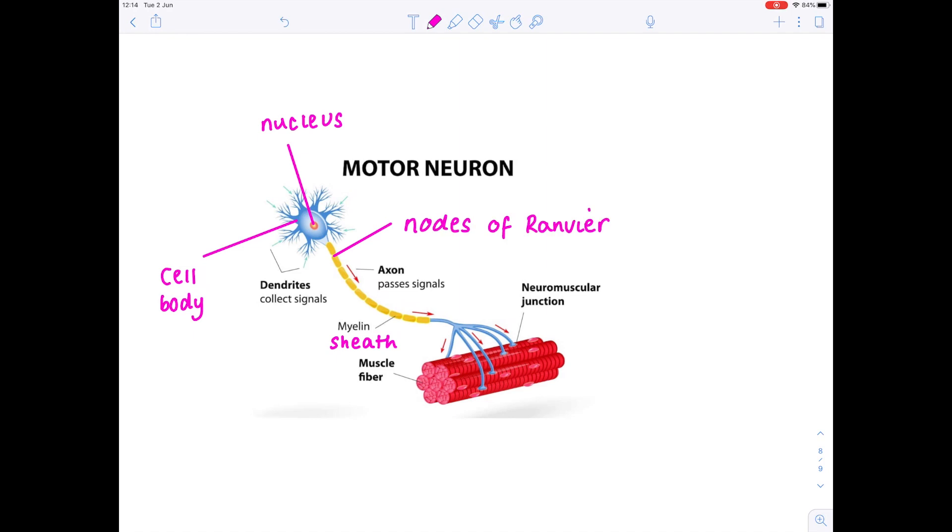Because this is a motor neuron, it's going to end at an effector, which in this case is the muscle fibre, and then that muscle fibre will respond by contracting. So we're looking at a motor neuron, which links the central nervous system to the effector, which therefore brings about a response.